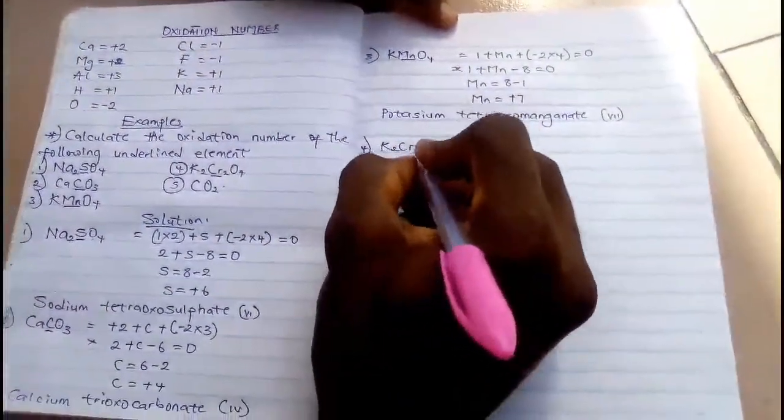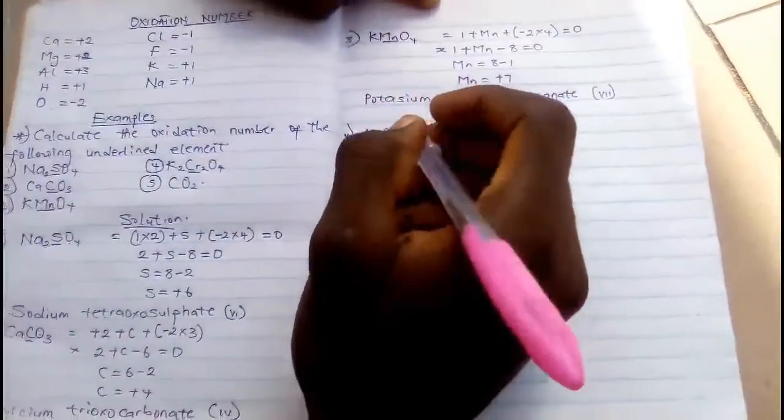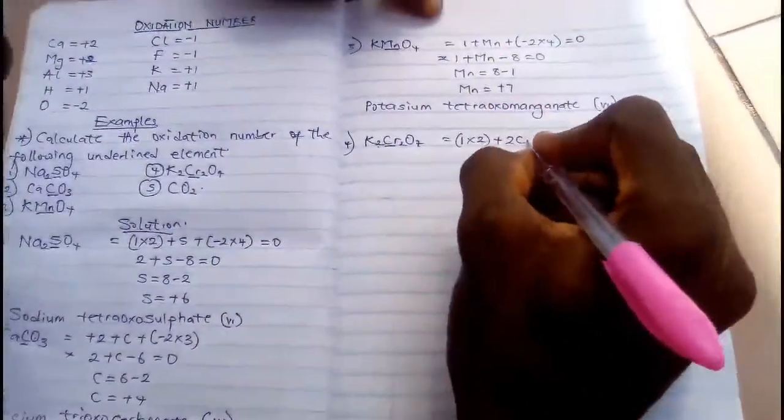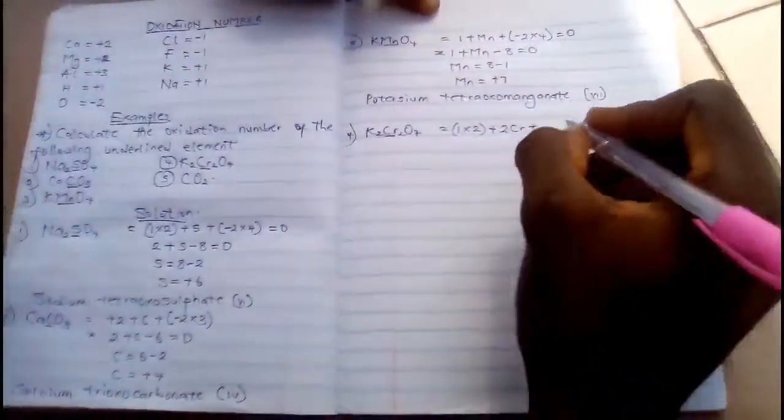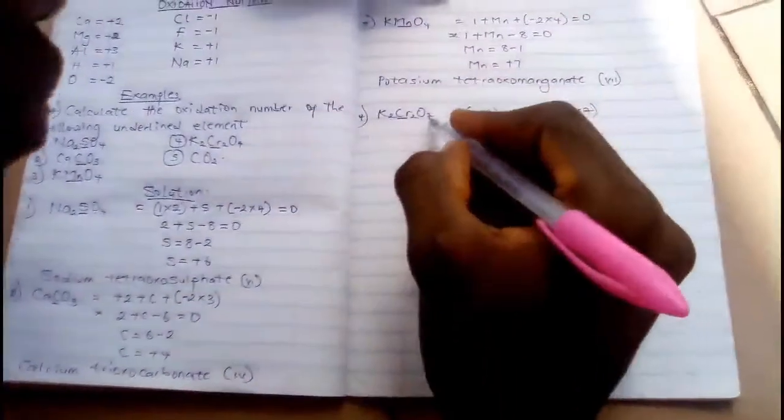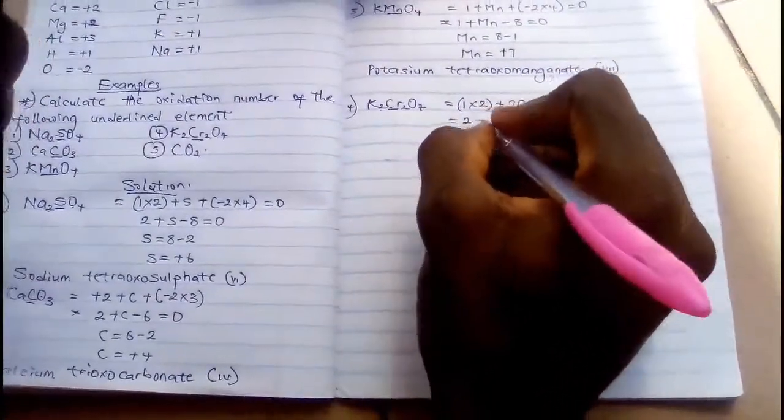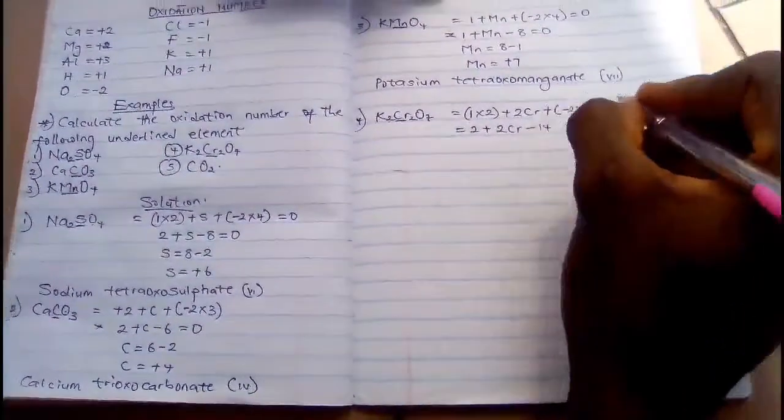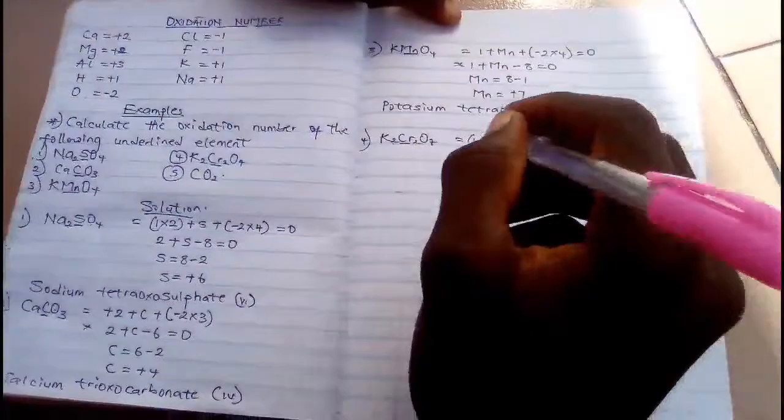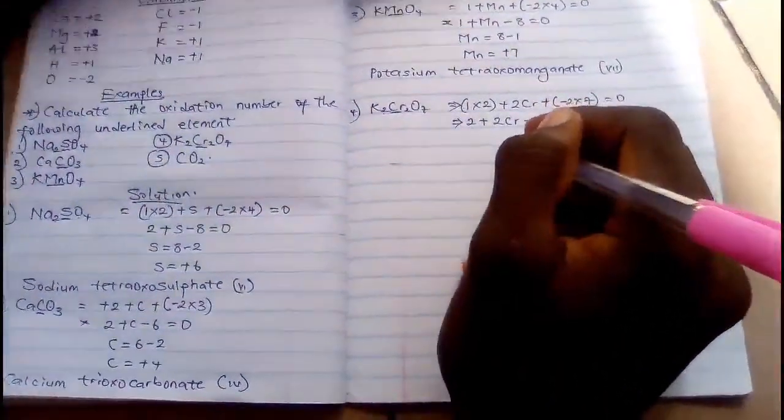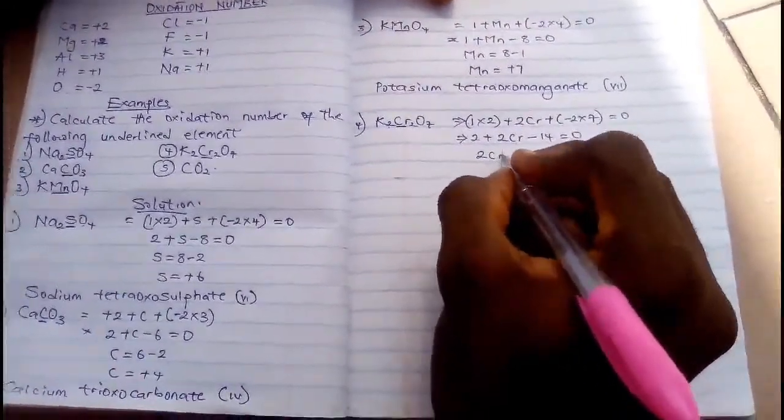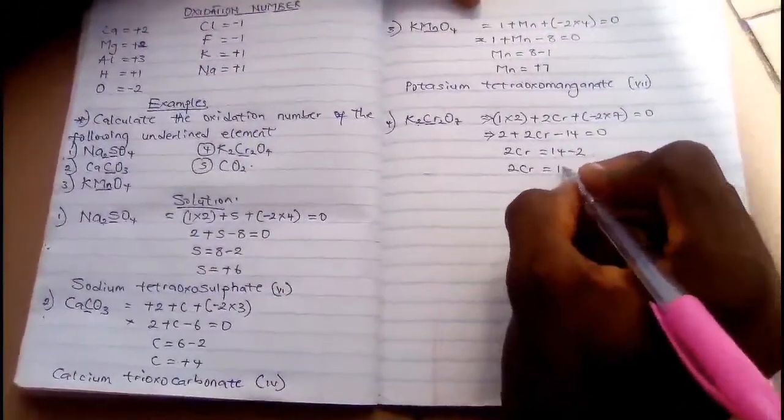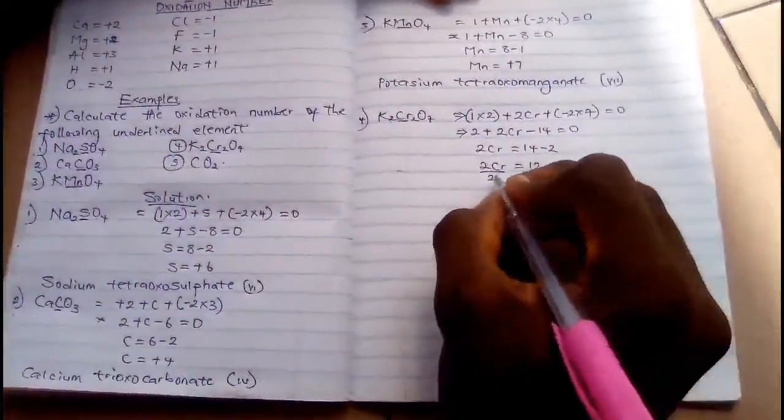So let me go to number four, K₂Cr₂O₇. We are looking for chromium. So if you are looking for chromium, K is +1, so 1 times 2 plus 2 chromium plus -2 times 7. Remember 6, -2 times 7. 1 times 2 gives you 2 + 2Cr - 14 = 0. So it's going to give you, let's collect like terms, 2Cr = 14 - 2.